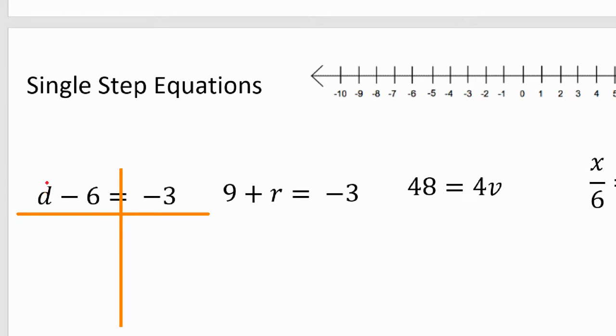It says, in this case, d minus six is going to give me negative three. So it says minus, but I don't want to minus. I want to add. Whatever I do to the left, I do to the right. And negative six plus six, zero. If I look up here on my number line, negative six plus six just means I go back to there.